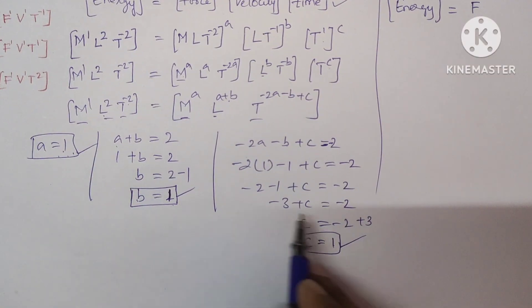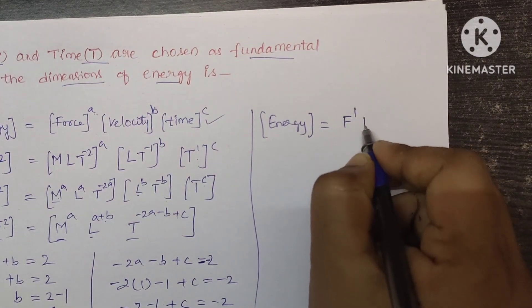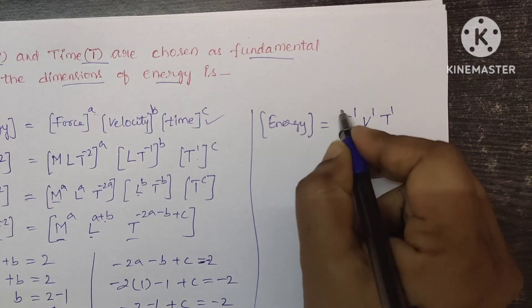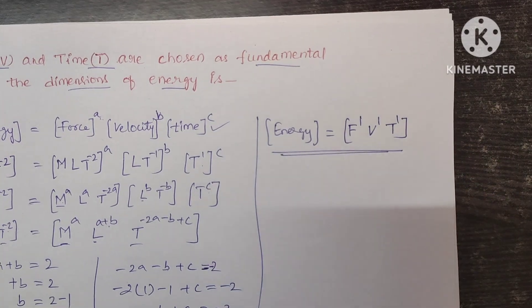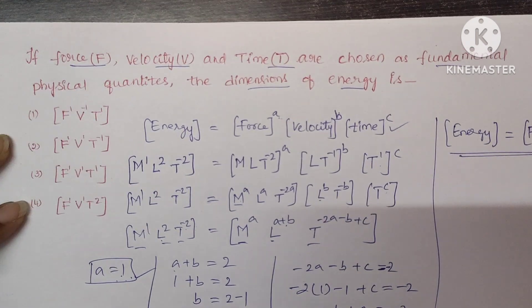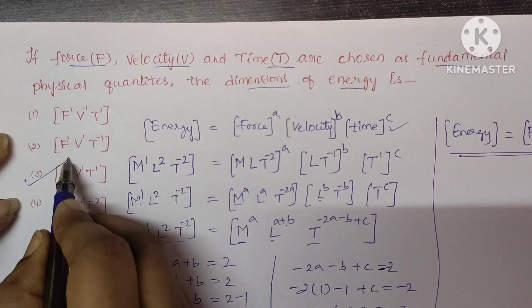So A is 1, B is 1 and C is also 1. So F power 1, V power 1, T power 1. So this is the dimensional formula of energy in terms of force, velocity and time are taken as fundamental physical quantities.